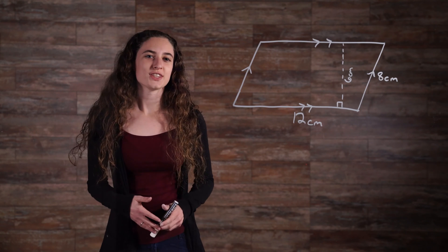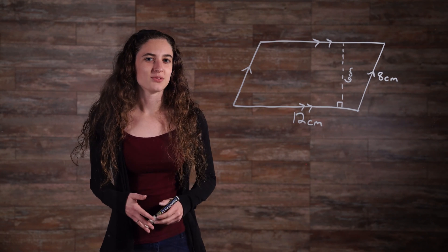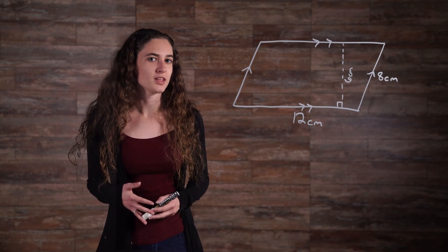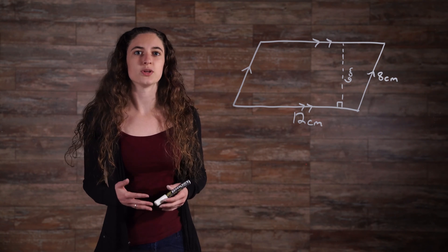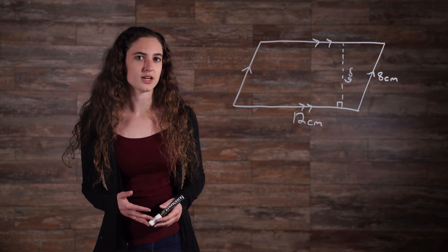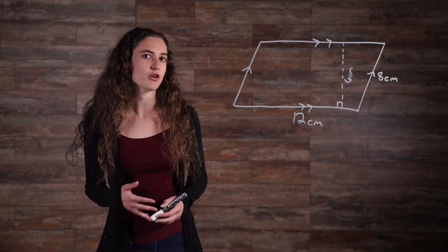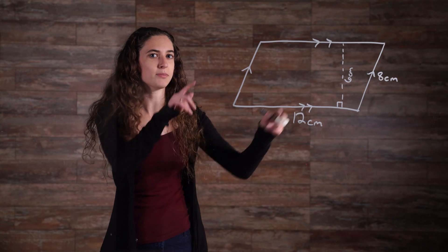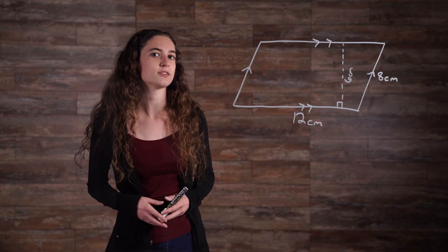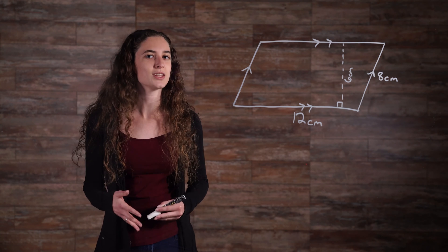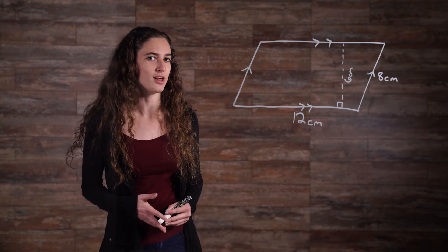Now let's look at a quick example problem. Find the area and perimeter of this figure. The first thing we need to do is determine if this shape is a parallelogram or not. It has four sides, so we know it's a quadrilateral. And it has the same arrow marks on opposite sides, indicating that it has two sets of parallel sides. So it definitely is a parallelogram.